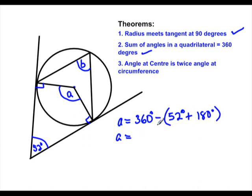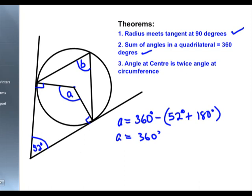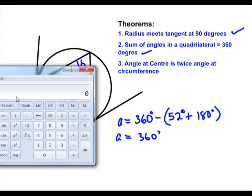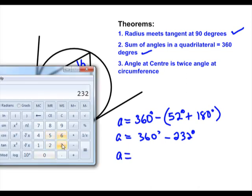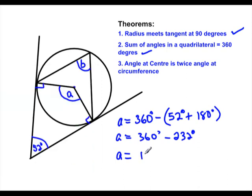And so angle A is equal to 360 degrees. Okay, so let's calculate it quickly. And so we're going to have 52 plus 180—that's 232 degrees. So angle A is equal to 360 minus 232.